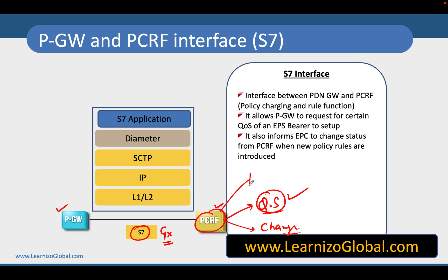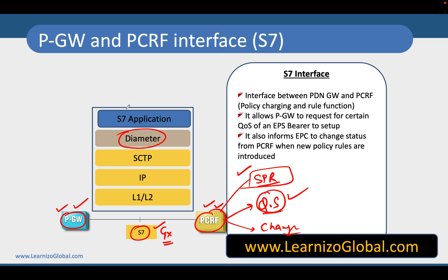Instead of being stored directly in the PCRF, these policies are often stored in databases referred to as SPR — Subscriber Profile Repository. The PCRF fetches all this information from the SPR and then hands over these policies to the PGW. The S7 interface, which runs on the Diameter protocol, is used between the PGW and PCRF, with S7 applications running on top carrying QoS information for a particular user.